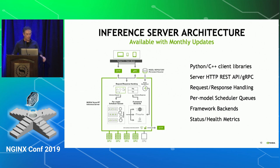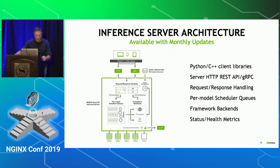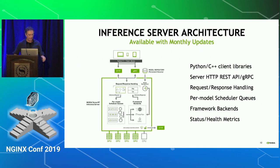Here is a bit more detail on the inference server architecture. On the top, you have clients sending requests to the inference server through HTTP or gRPC. The requests are handled and then go to a per-model scheduler queue. Once it is ready, the request is sent to the backend for computation. It supports multiple GPUs but also CPU. At the same time, we expose metrics through another port. Once the computation is done, the answer is sent back through response handling to the client.